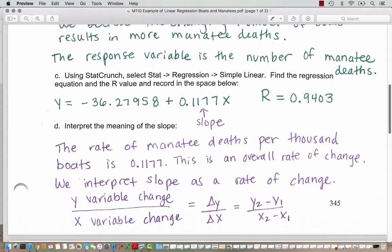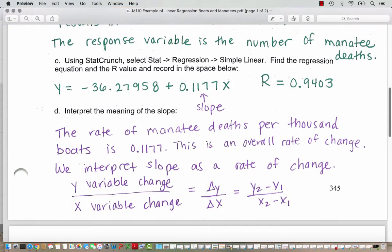We want to interpret the meaning of the slope. The slope as a value is 0.1177. But what does that mean? The slope is a rate. In this case, the slope is the rate of manatee deaths per thousand boats. And that rate is 0.1177. So this is an overall rate of change. You could think about it as the thousands of boats go up, every additional 1000 boats, we are predicting an increase in manatee deaths of 0.1177.